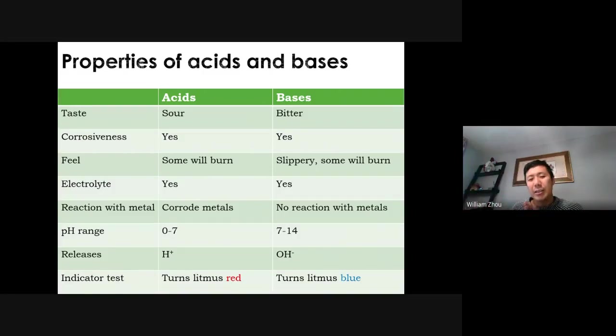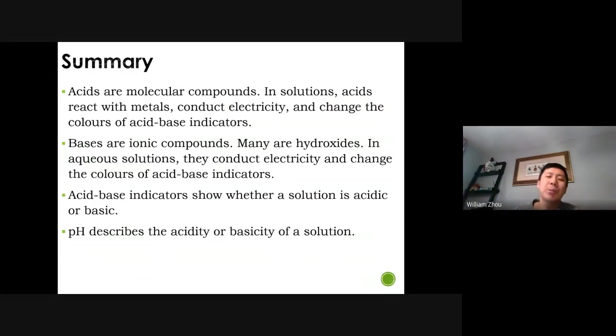Anyway, so let's wrap up the lesson here. To summarize, acid versus base. Acid tastes sour. They're corrosive. Some will burn. They are good conductors of electricity. They corrode metal. The pH is from 0 to 7. Releases H+. And turns litmus red. Base is the other column. It's bitter. They're both corrosive. Base is just as corrosive as acid. Slippery. And again, it will burn. It conducts electricity. It does not react with metals. pH is quite high, 7 to 14. Releases hydroxide and turns litmus blue. You need to know the properties of acid and base. You need to know the pH scale, what that means, and what those numbers mean. Difference of 1 means 10 times difference. That's basically it for this lesson.